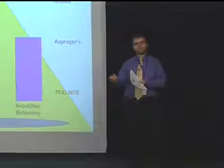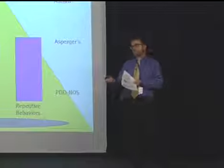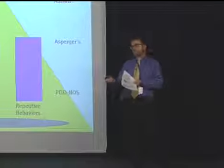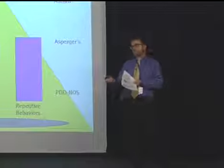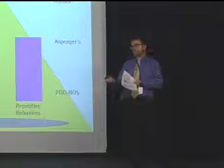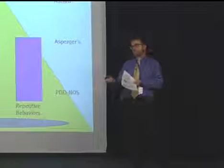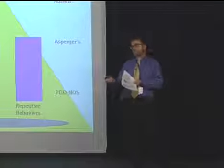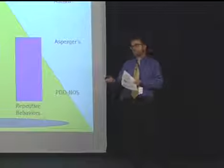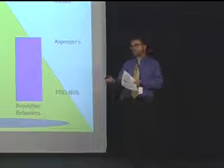Another way to think about this is a triad of impairments — the three areas of communication, social, and repetitive behaviors — each ranging from more severe to less severe. In general, more severe presentations are more likely labeled as autism, Asperger's is in the muddled middle, and PDD-NOS represents less-impacted presentations. There are no clear-cut rules; it depends heavily on what the clinician observes.